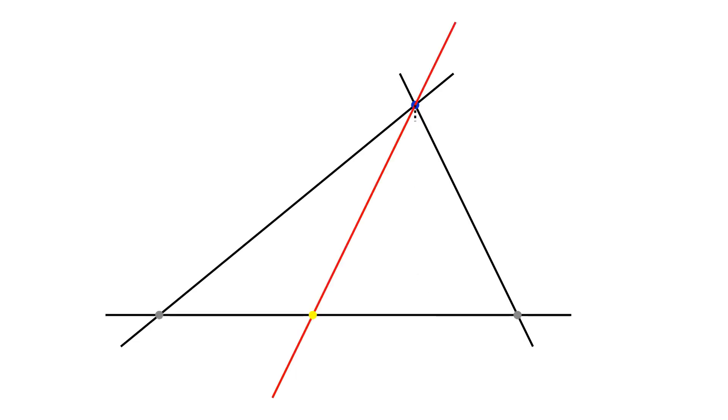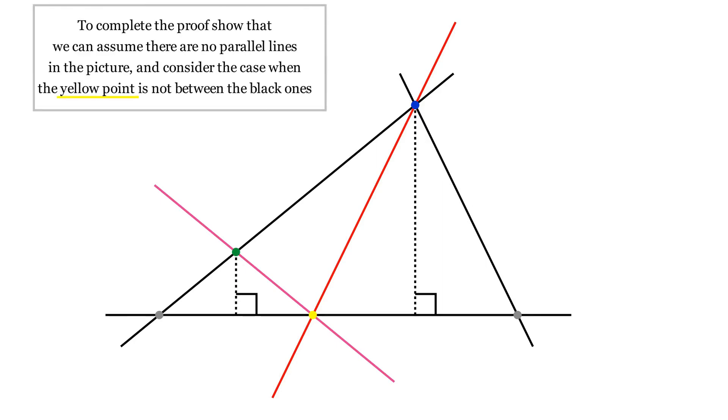So, suppose some third red line passes through the blue point and intersects the bottom line at a yellow point between two black points. Some third pink line passes through the yellow point and intersects one of the side segments at a green point. But the distance to the bottom line from the green point is smaller than from the blue point, which contradicts the definition of the blue point and proves the theorem.